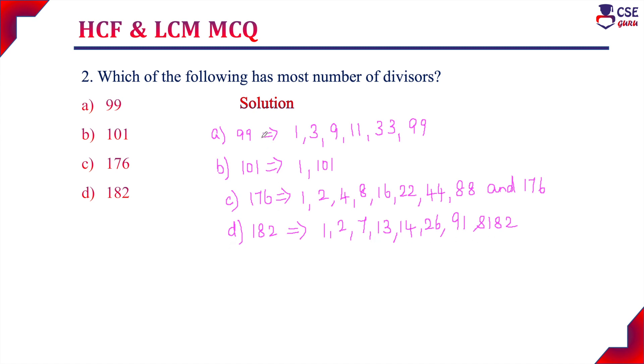Among these four numbers and their divisors, option C, 176, has the most number of divisors. The correct answer is option C.